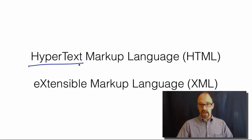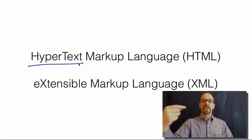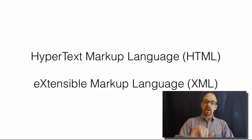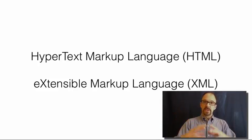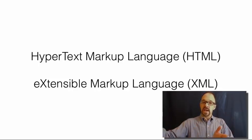So the hypertext markup language, HTML, is a markup language designed to enable you to create documents to display hypertext. XML, on the other hand, is a markup language that defines rules for how to create structured documents. HTML documents are structured, but not very well. XHTML is HTML written in XML, and lots of markup languages are written in XML.